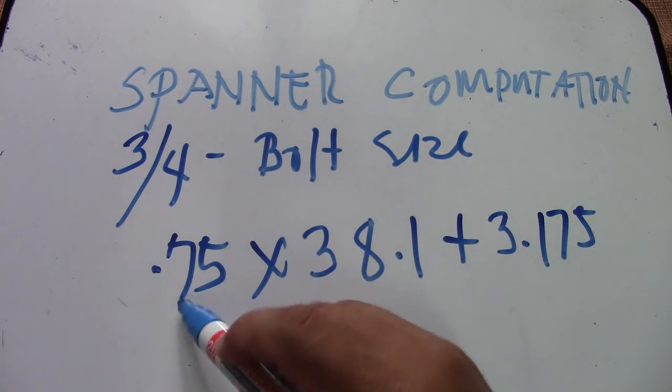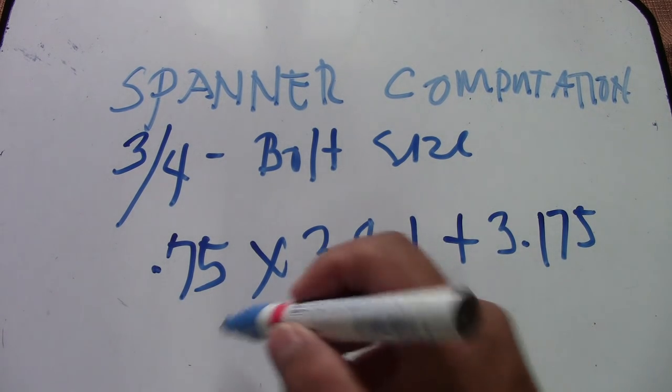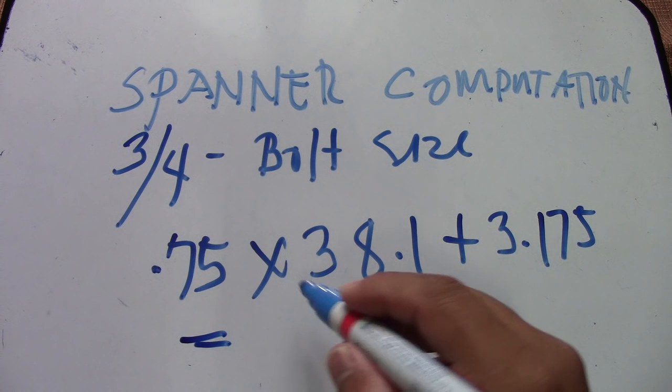If you multiply this all, our answer is, the size of the spanner is 31.7.